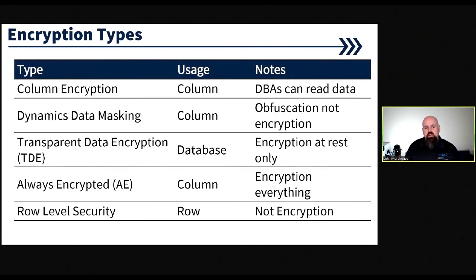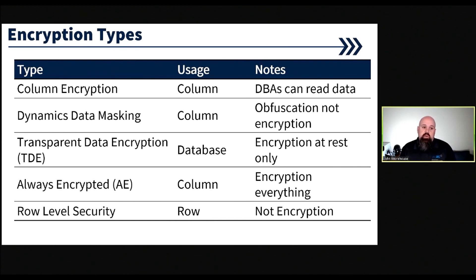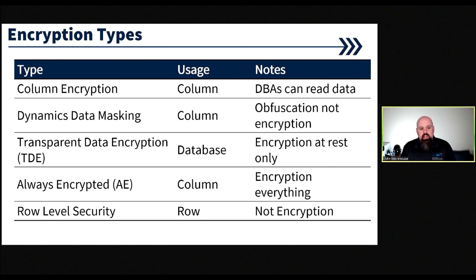Here are some encryption types we can use. We can use column-level encryption within SQL Server, where DBAs with the right permissions — if they're sysadmin — can actually read the unencrypted values and utilize the decryption to see the values. We can use dynamic data masking, which is obfuscation, not encryption — that's at the column level. I don't recommend this as an encryption method. You can hide the true value of the data from the end user, but there are ways to break that and get around it. I want to at least throw it out there since I've seen it used as an encryption method — but it's not really.